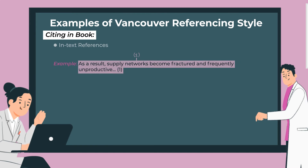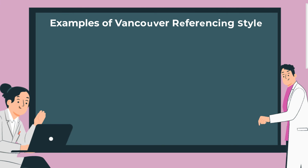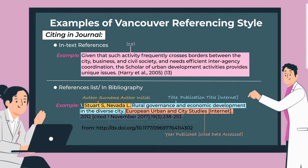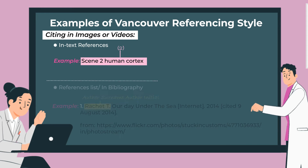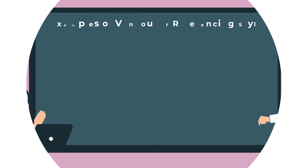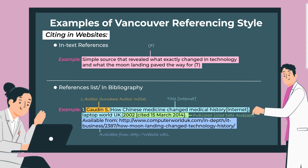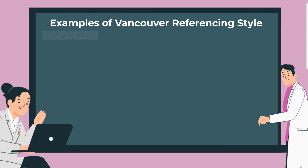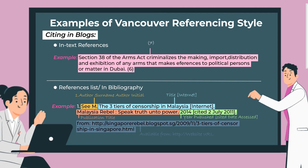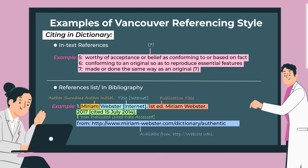This is how we cite in books from both the in-text and reference list perspective. This is how we cite in journals from both the in-text and reference list perspective. This is how we cite in websites from both the in-text and reference list perspective. This is how we cite in a dictionary from both the in-text and reference list perspective.